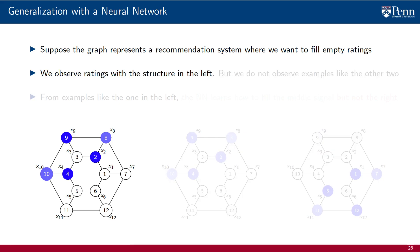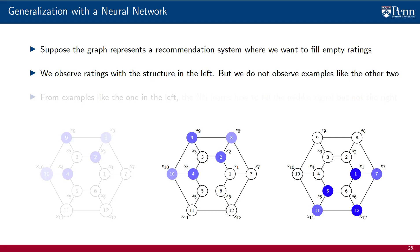Suppose that we observe ratings with the structure on the left, but we never get to observe examples like the other two. That is, the signal on the left is observed during training, but the other two examples are observed only during the execution of the GNN.